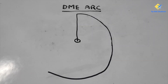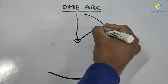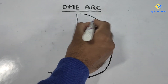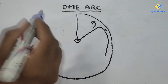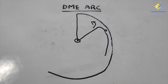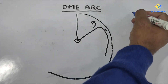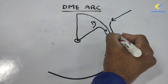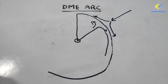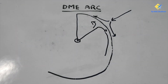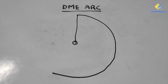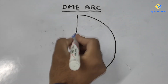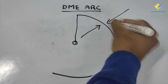There are two ways a DME arc can be performed. The first is when you are going outbound and then join the DME right or left as per the procedure, followed by whatever outbound procedure you might be instructed by ATC. The second, which is more common, is when you come inbound towards the station, then join the DME right or left and follow the arc to land at a particular aerodrome.